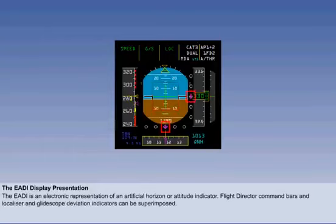Localiser and glide slope deviation indicators are also incorporated. Other key information can also be shown, and we will work our way around the E-A-D-I display in a clockwise direction.